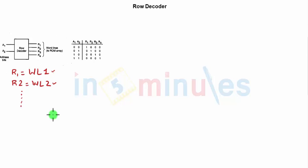Recollect when we wanted to access different rows or word lines in case of an SRAM array or a DRAM array or even a ROM array, we always use this row decoder which was a black box.